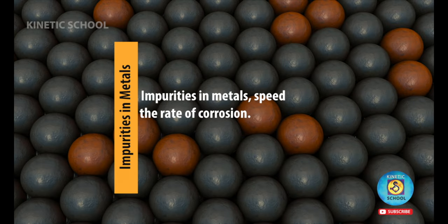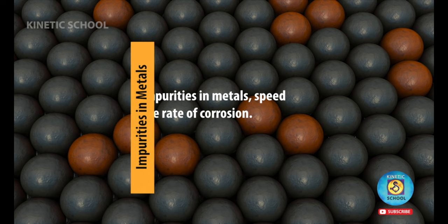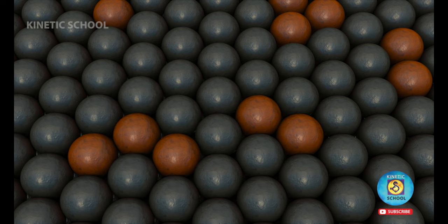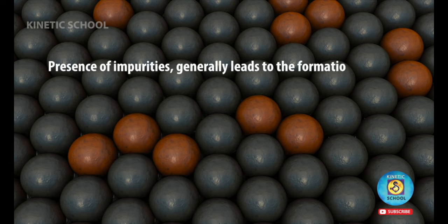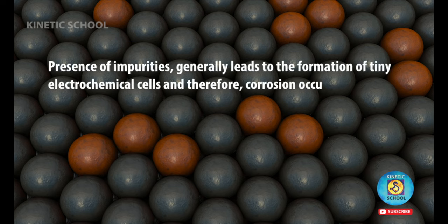Impurities in metals speed the rate of corrosion. Presence of impurities generally leads to the formation of tiny electrochemical cells, and therefore, corrosion occurs.